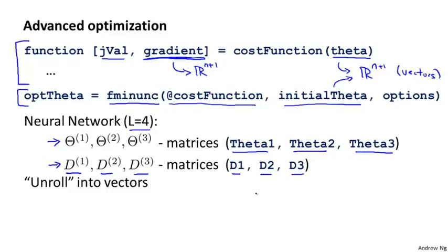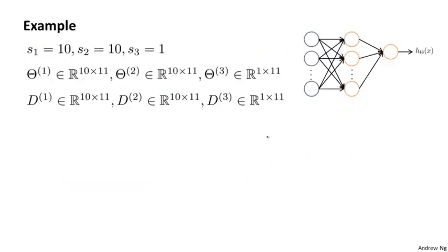In this video, I want to tell you about how to take these matrices and unroll them into vectors, so they end up in a format suitable for passing in as theta or returning as a gradient. Concretely, let's say we have a neural network with one input layer with 10 units, a hidden layer with 10 units, and one output layer with one unit. S1 is the number of units in layer one, S2 in layer two, and S3 in layer three.